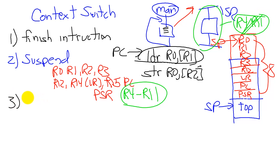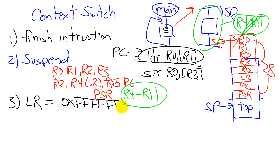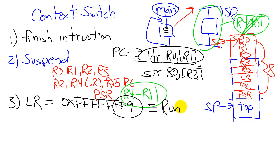The third step is to set the link register to a special code, and this special code is FFFFFFF9. You notice the link register is odd and it's got this weird thing. This pattern means I'm running in an interrupt service routine.